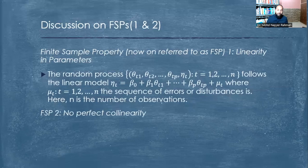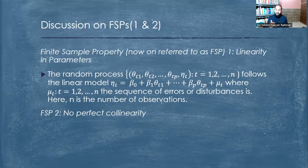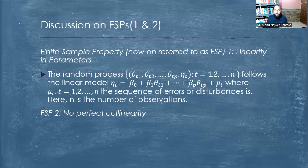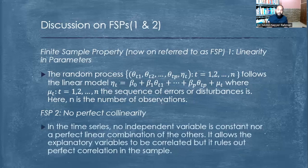No perfect collinearity means that the correlation between different independent variables should not be 100% or equal to one. If we have four independent variables A, B, C, D, then C and D should not have a correlation equal to one. If they do, they are perfectly correlated, which will affect the impact measured on the dependent variable and the model becomes mis-specified. If explanatory variables are correlated, there is a problem in finding out the true impact on the dependent variable.